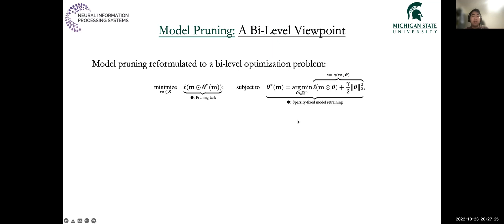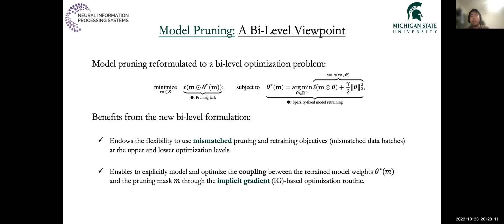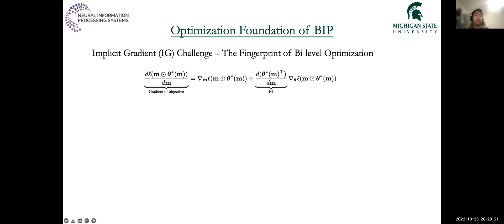The solution we provide is through bi-level optimization theory. We first reformulate the model pruning task into a bi-level optimization problem, where the upper-level problem optimizes the pruning mask for the model, and the lower-level problem retrains the model with the fixed mask. The benefits from this bi-level formulation are two-fold. Firstly, we now have the flexibility to use mismatched pruning and retraining objectives — for example, mismatched data batches for the upper- and lower-level problems — which is known to boost the generalization of the found mask.